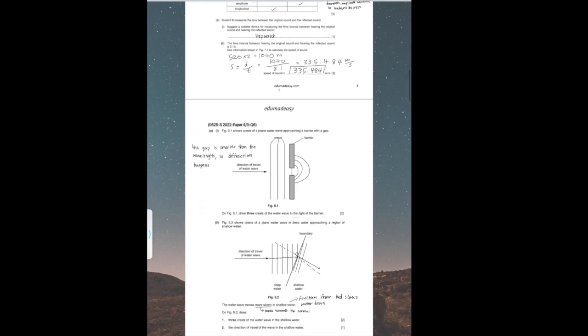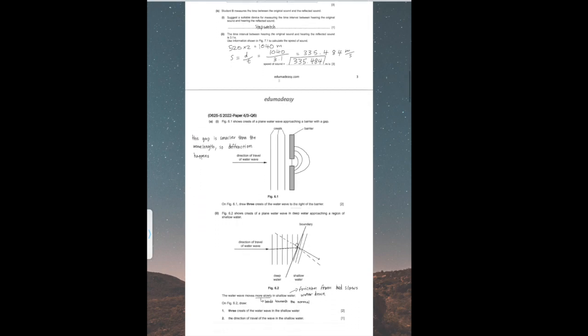Part B, Part I states: Student B measures the time between the original sound and the reflected sound. Suggest a suitable device for measuring the time interval between hearing the original sound and hearing the reflected sound. This would be a stopwatch.